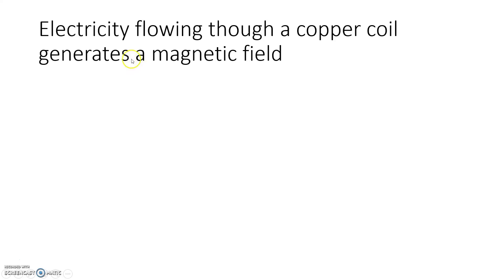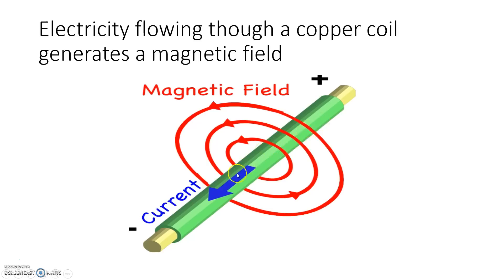From school physics you know that current flowing through a ferromagnetic substance generates a magnetic field. This diagram shows a ferromagnetic cylindrical substance through which current is flowing in the direction shown by the blue arrow. The circular lines are the magnetic field generated due to the flow of current, and the direction of the magnetic field is shown by the arrows situated on the red colored circles.